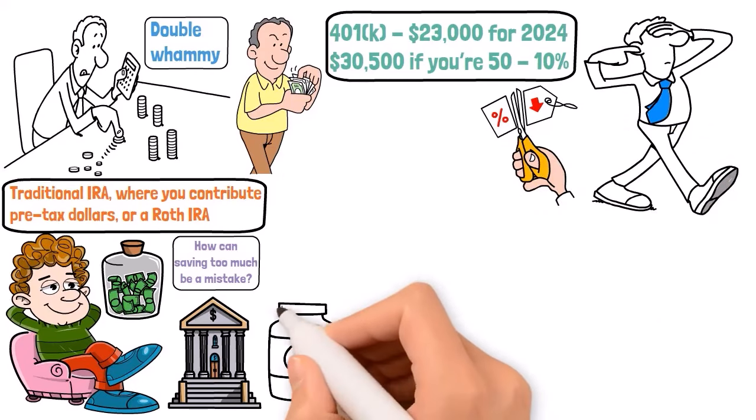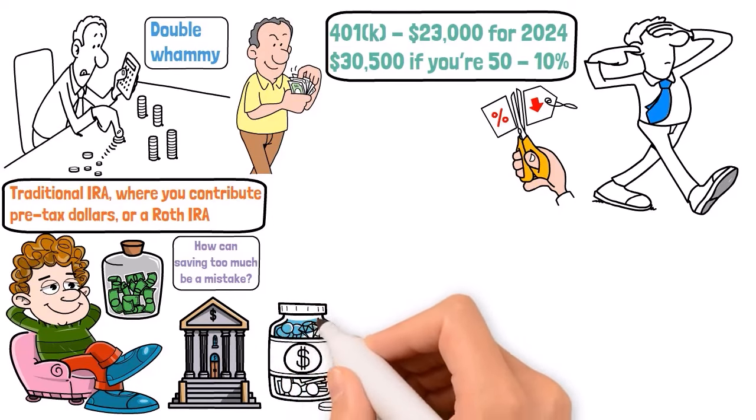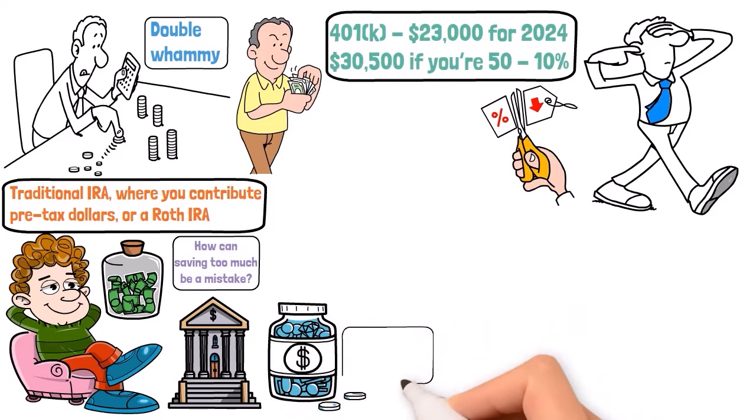Your tax bracket in retirement is key. It's determined by your taxable income, which includes your 401k or IRA distributions, pension income, and possibly a portion of your Social Security benefits. Knowing your bracket helps you plan for the tax impact on your retirement savings.